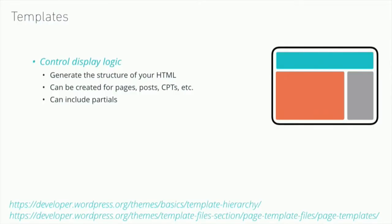Templates control display logic — they position the structure. Anything on your page that needs to be displayed dynamically is controlled by the template. You're essentially using PHP to generate the HTML of your page. You can use a template for creating post types, pages, custom post types, and anything that WordPress will do that you can theme. Partials can be included, meaning you can use smaller pieces of code like a header and footer in one file rather than having them in all of your template files.